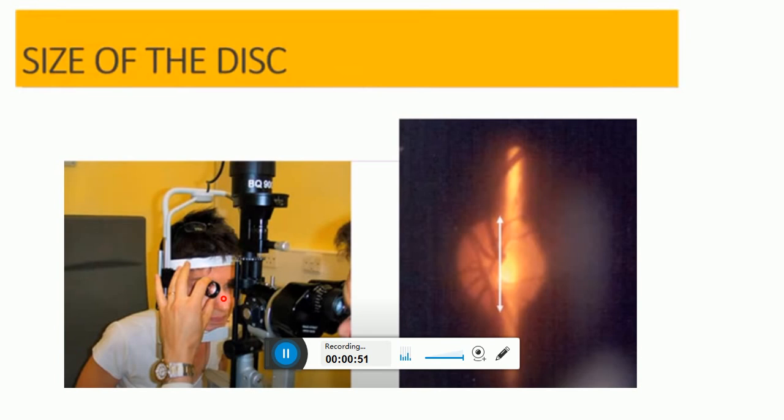The optic nerves can be examined by slit lamp, by direct ophthalmoscope, and by slit lamp biomicroscopy with a handheld plus 66, plus 78, or plus 90 diopter aspheric convex lens or ruby lens, or a contact lens gold main lens, or indirect ophthalmoscopy may be done to examine the optic nerve head.